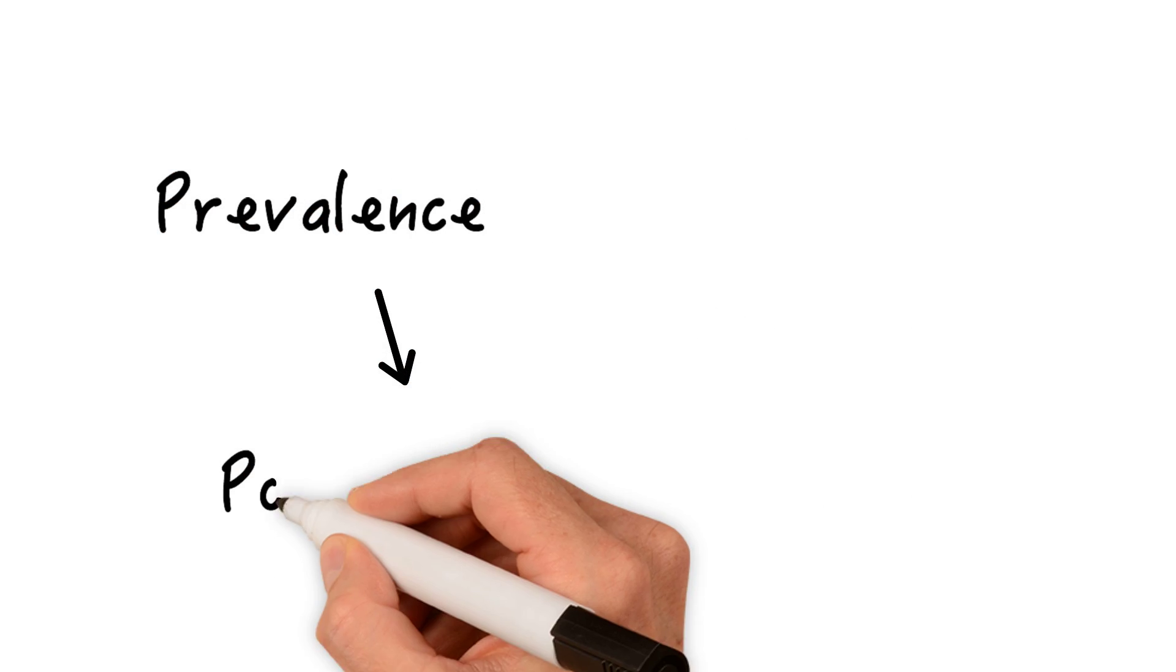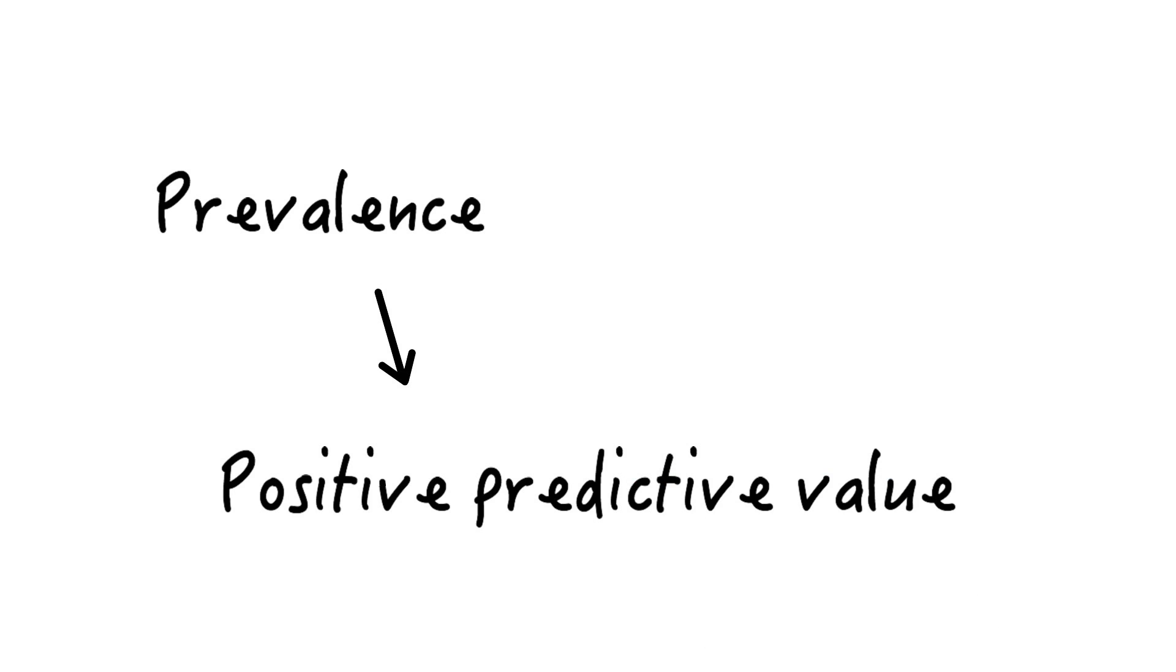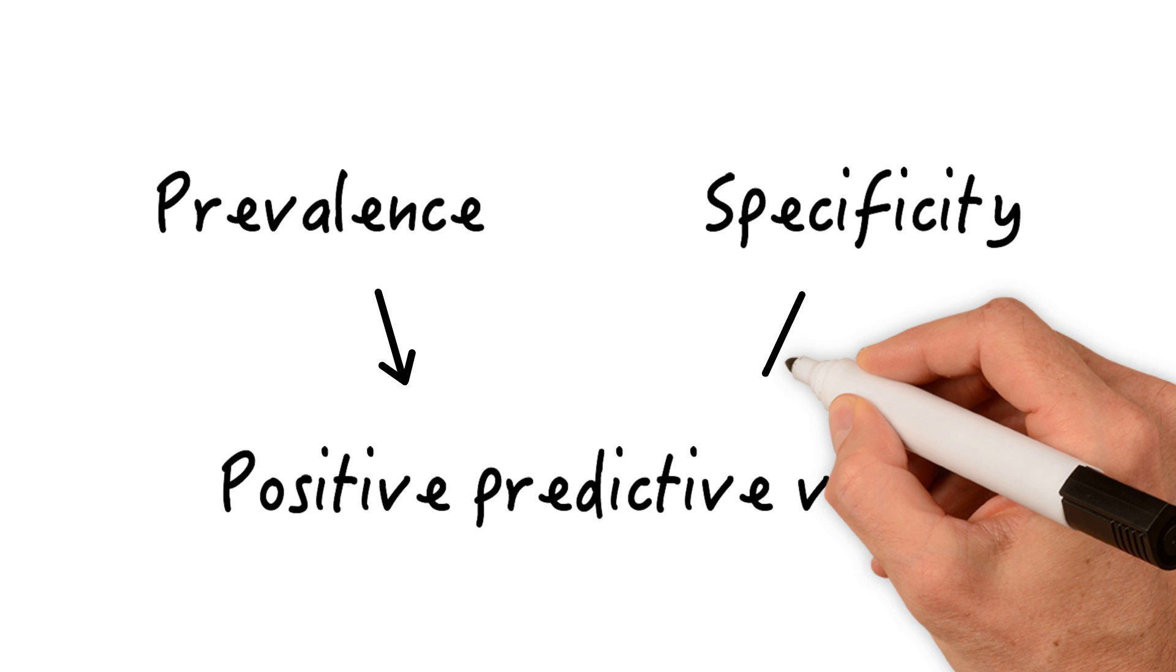Apart from the prevalence, there's also another variable that affects the positive predictive value in a major way, and that variable is called specificity. Here's an example.